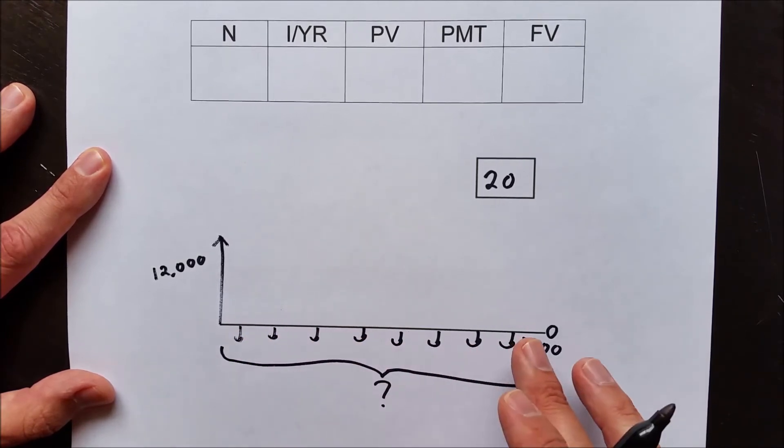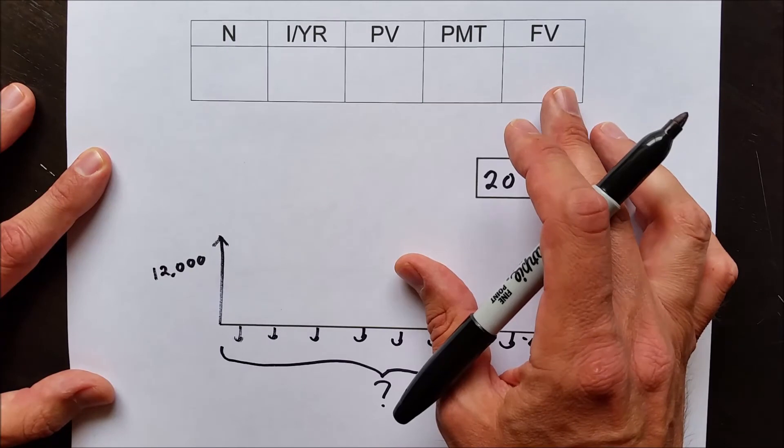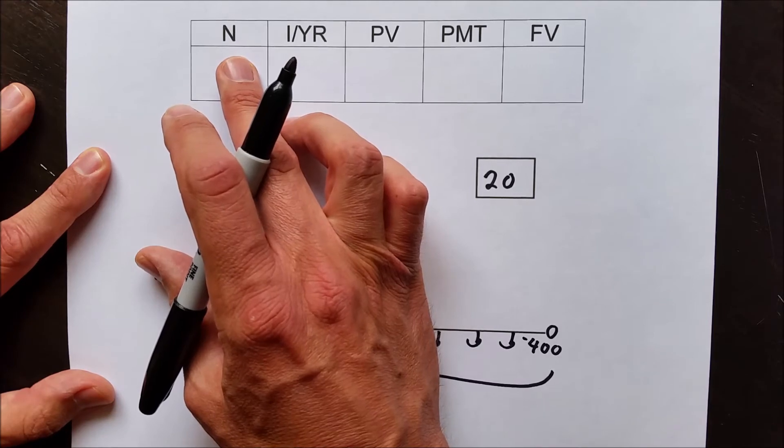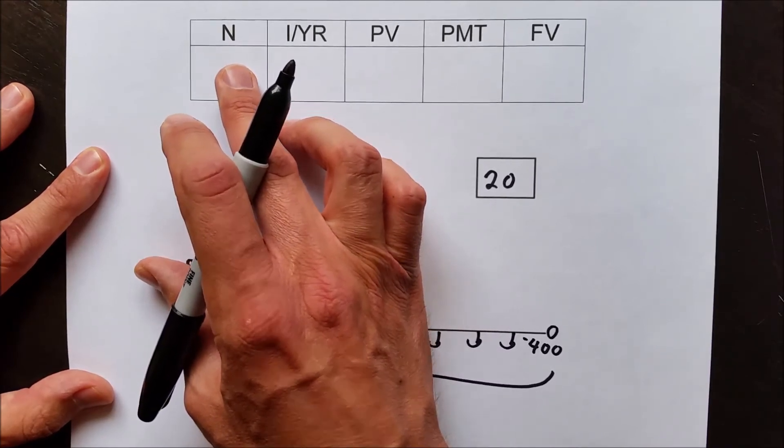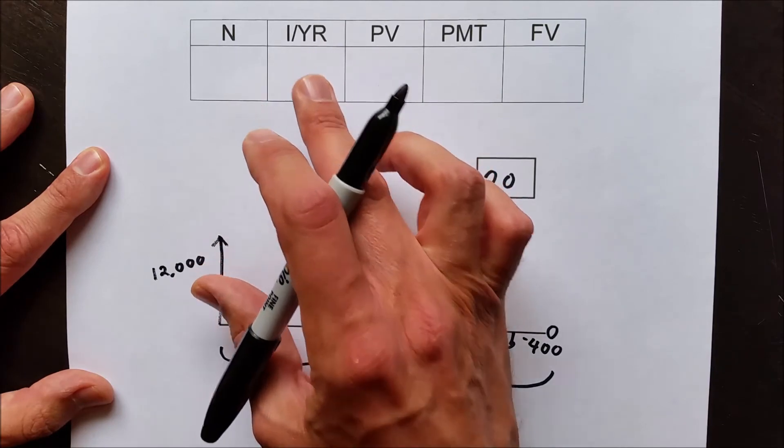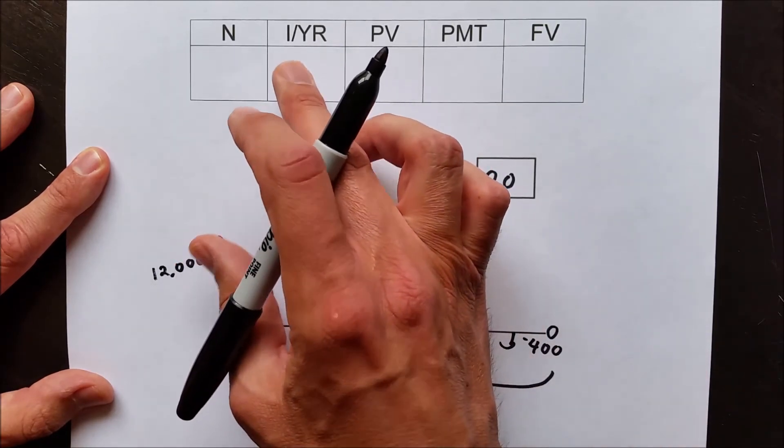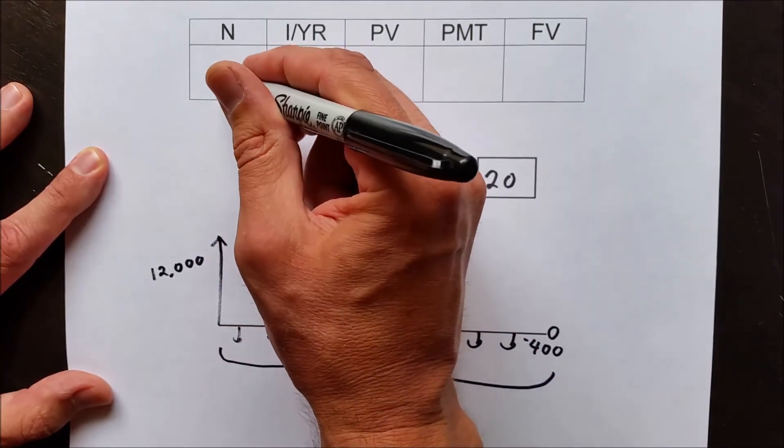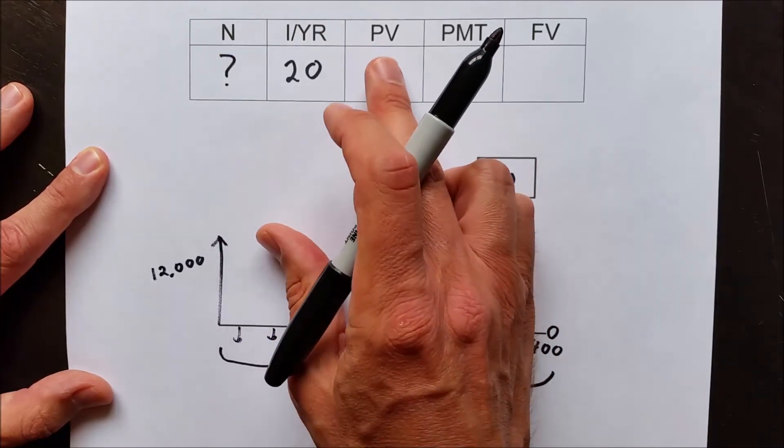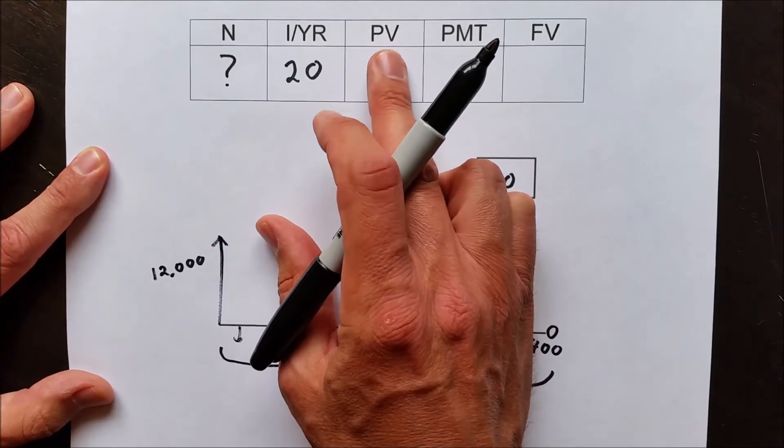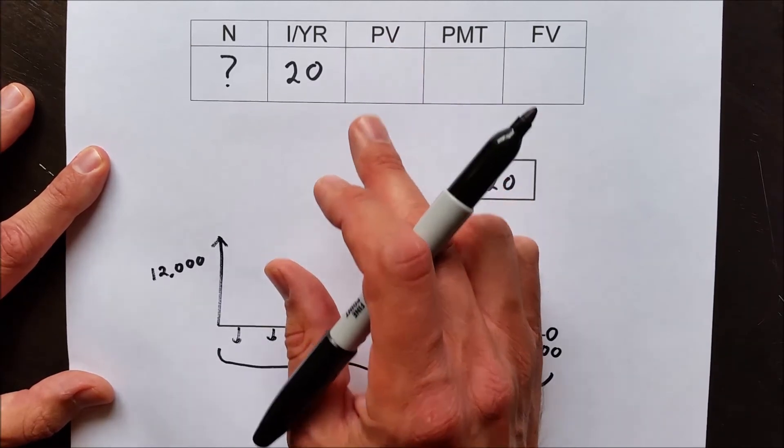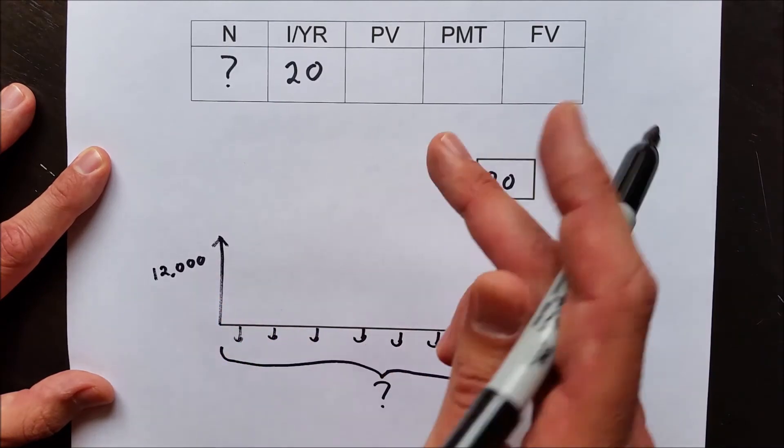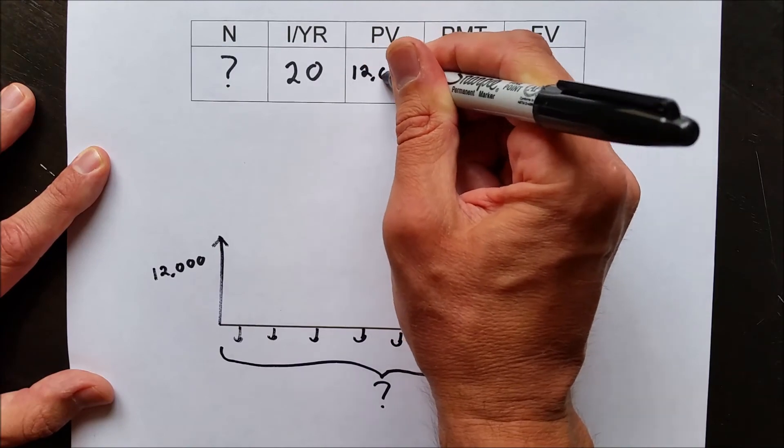Once we have the information on here, we then enter it up here into the calculator table. The calculator table left to right has N, which represents number of months. We don't know what that is in this situation. IYR is interest rate, so we know it's 20%. Since we don't know what the time frame will be, we'll put a question mark. PV is present value. That's a one-time value that happens today and happens today only. Since he has the debt today of $12,000, it's positive. He's already got it. We're going to put $12,000 right here.